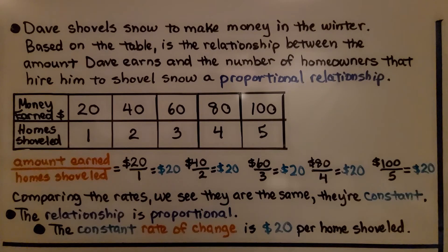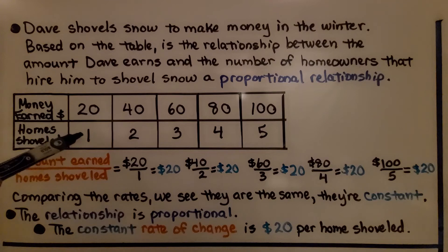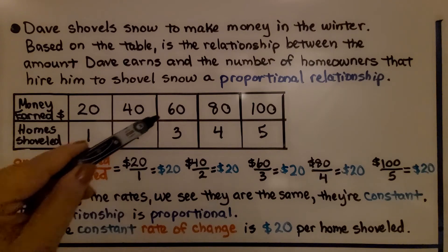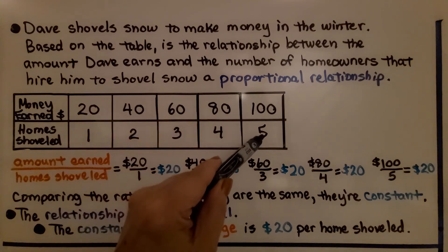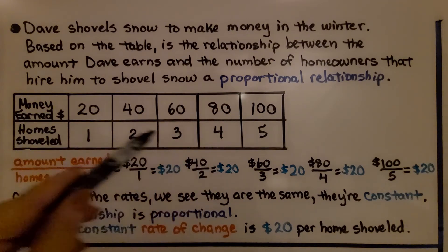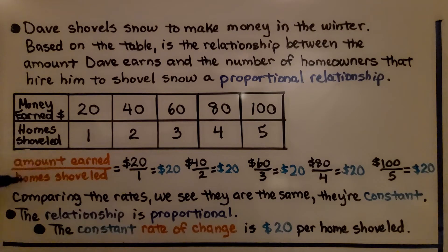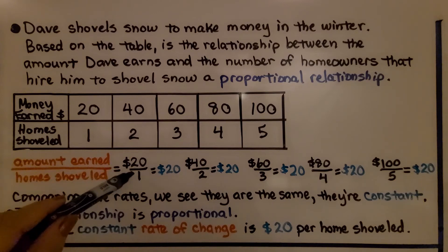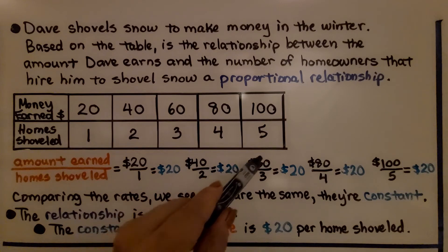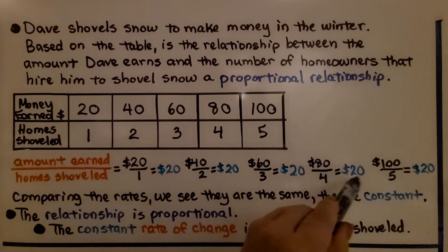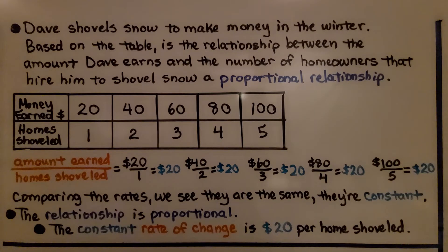Dave shovels snow to make money in the winter. Based on the table, is the relationship between the amount Dave earns and the number of homeowners who hire him proportional? He earns $20 for one home, $40 for two, $60 for three, $80 for four, and $100 for five. Doing amount earned over homes shoveled: $20, $40÷2=$20, $60÷3=$20, $80÷4=$20, $100÷5=$20. All rates are constant at $20 — the relationship is proportional. The constant rate of change is $20 per home shoveled.